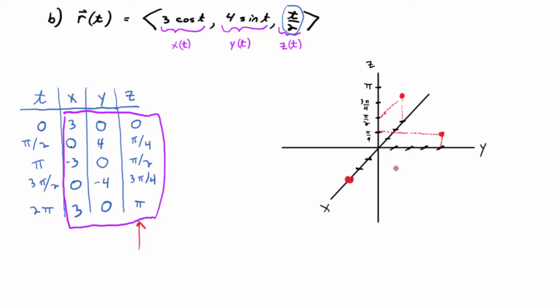And then the next point, what's the next point? Zero, negative four, three pi over four. So negative four on the y-axis would be over here, somewhere. And then I'm going to draw an edge of the box straight up parallel with the z-axis up to a height of three pi over four. Draw out an edge parallel to the y-axis. And where those edges meet is your point.